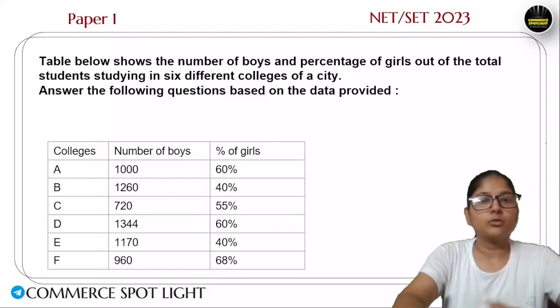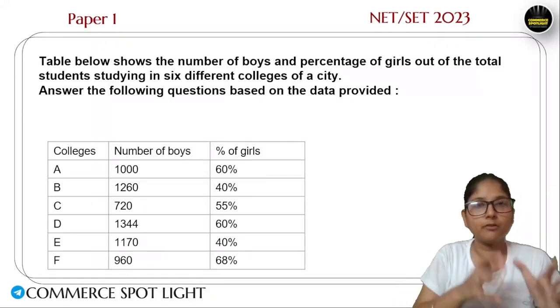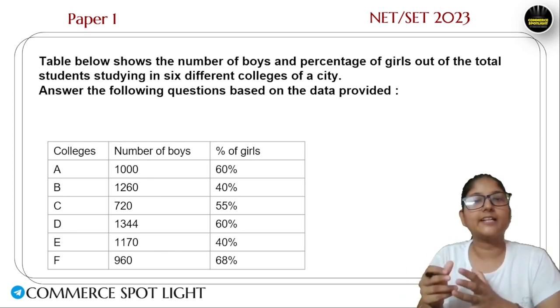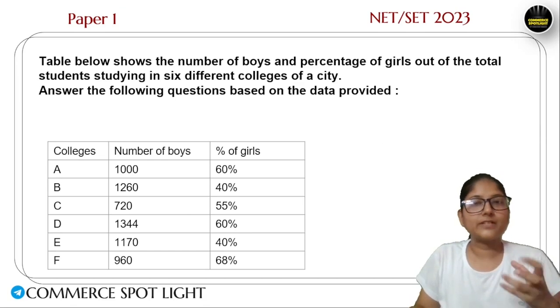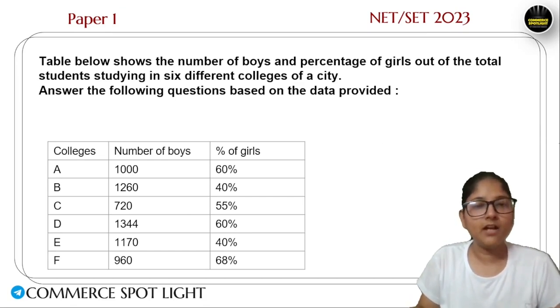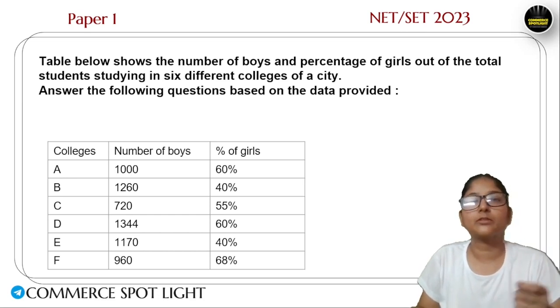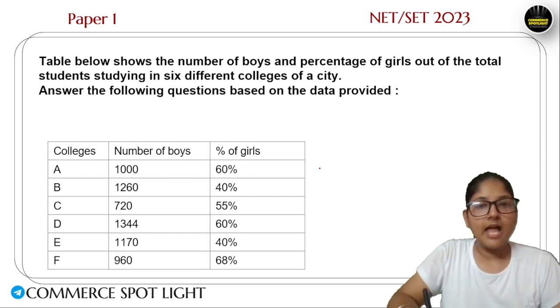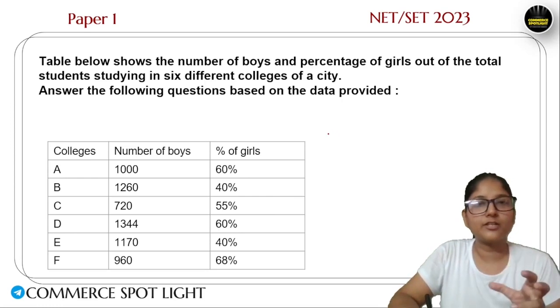Let's start the DI. Let's start a very important DI one by one. Keep pen and paper and solve it. Whatever question comes up, first pause and solve it yourself, then follow along. So let's get started. A question is given where a table has the number of boys and the percentage of girls for 6 different colleges.